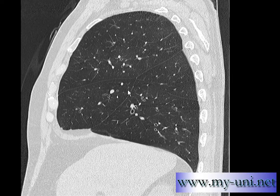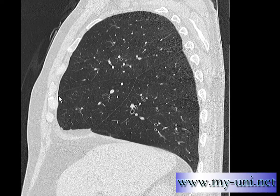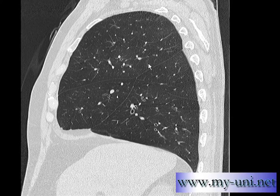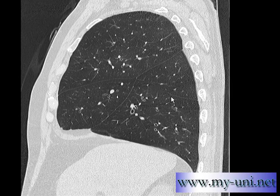This is the right lung — it has an oblique fissure and a horizontal fissure. So this is the right upper lobe, this is the right middle lobe. Always remember: the right middle lobe is anterior. This is the right lower lobe, which is posterior. Its superior aspect is adjacent to the right upper lobe, and anteriorly it has the right middle lobe.